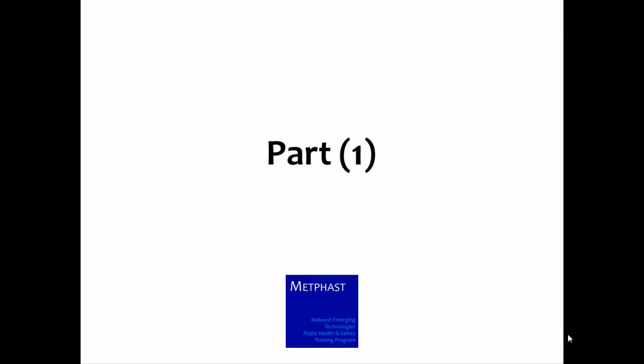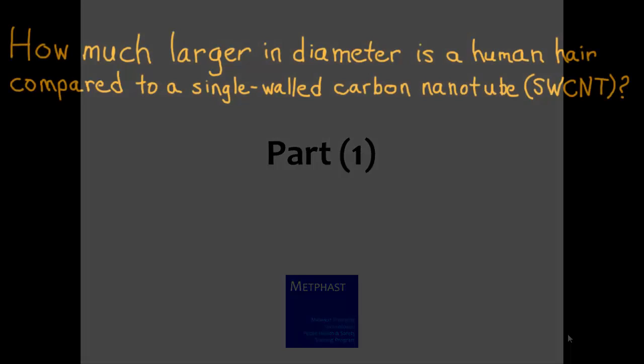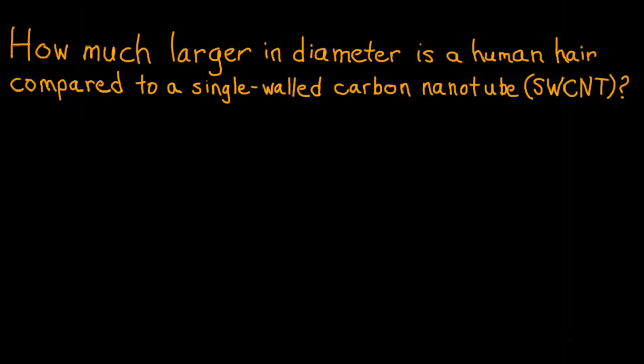The remainder of the orders of magnitude activity involves a series of exercises that learners can perform by themselves, in pairs, or in small groups. In Part 1, learners are asked the question: how much larger in diameter is a human hair compared to a single-walled carbon nanotube? Another way to phrase this is: by how many orders of magnitude is a human hair larger than a single-walled carbon nanotube?